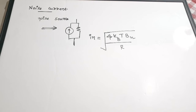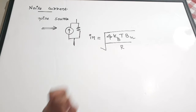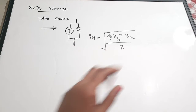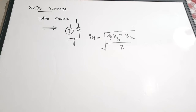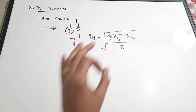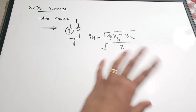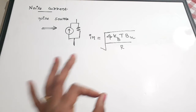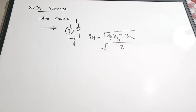Next, the noise current due to thermal noise is modeled with an ideal current source in parallel with a resistance. The noise current equation is: iN = √(4·KB·T·BN / R). This is derived by dividing the noise voltage by R, which brings R into the denominator inside the square root.